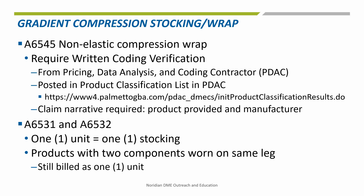For the compression stocking codes A6531 and A6532, one unit of service is generally for one stocking. However, if a manufacturer has a product consisting of two components which are designed to be worn simultaneously on the same leg, the two components must be billed as one claim line with one unit of service. For example, a product which consists of an unzippered liner and a zippered stocking.